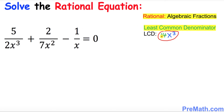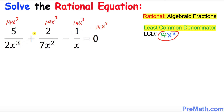In our next step, take whatever we got as our least common denominator and multiply it across the board. Put down 14x³ on top of each term — 14x³, 14x³, 14x³, and 14x³ on top of each term.